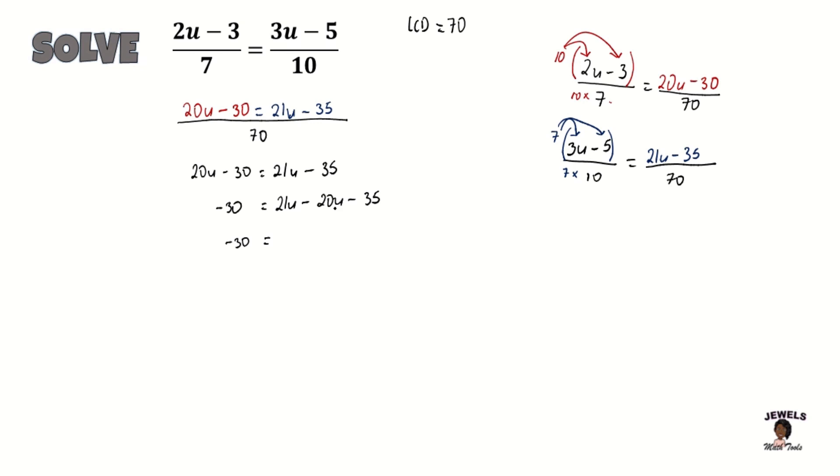So 21u minus 20u will equal to just u minus 35. And now I'm going to move my 35 over to my 30, so I'll have negative 30 plus 35 equal to just u.